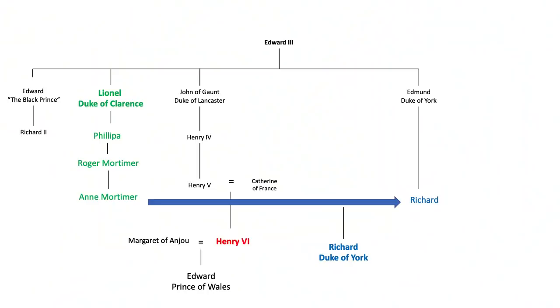Two different parts of the family believed they had the right to wear the crown — it's like the ultimate family falling out over a will. The problem all started when Edward III died back in 1377. The crown passed to the only child of his deceased eldest son, a boy king, Richard II. However, Richard was usurped by his cousin Henry Bolingbroke, whose father was John of Gaunt, Duke of Lancaster, the third son of Edward III. Henry Bolingbroke was subsequently crowned King Henry IV. His son was Henry V of Agincourt fame, and his son Henry VI represented the House of Lancaster when the Wars of the Roses broke out.